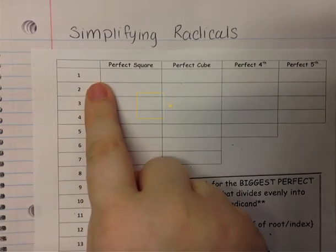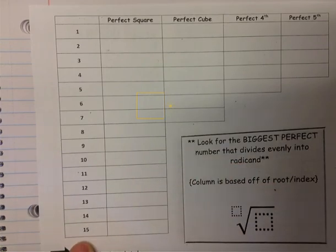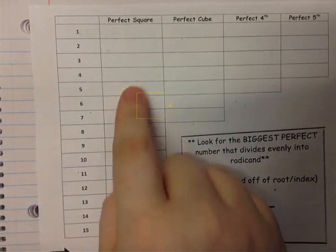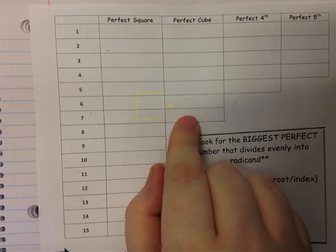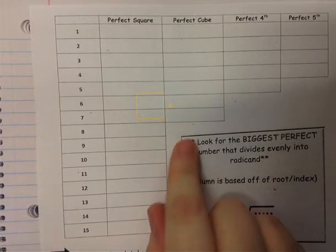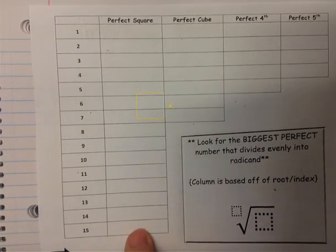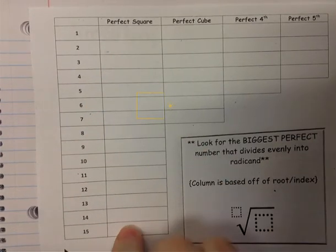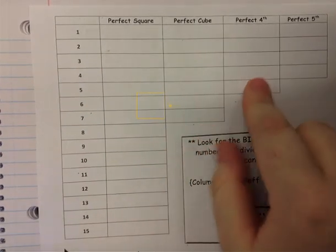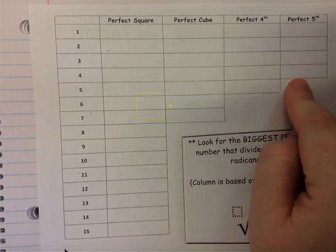We're going to first determine what our perfect squares are. We're going to go from 1 through 15 for our perfect squares. For our perfect cubes, we're only going to go from 1 to 7. There are obviously going to be more — you can always go beyond 15 — but these are just the ones I'm going to be using today. Same thing for the perfect fourths, we're going to go from 1 to 5. And for perfect fifths, we're going to go 1 through 4.